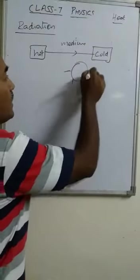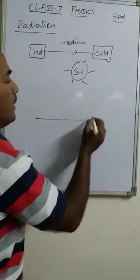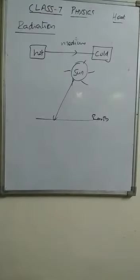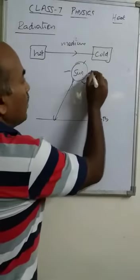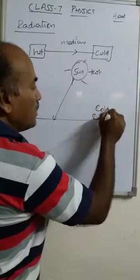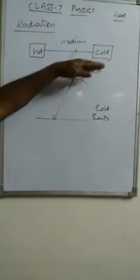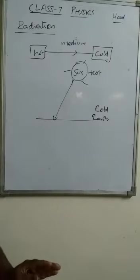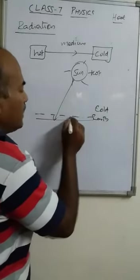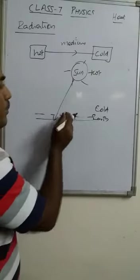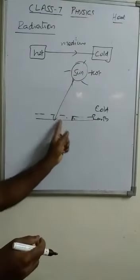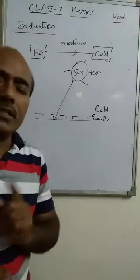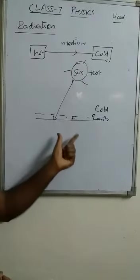An example: from the sun, the earth receives heat. The sun is the hot object and the earth is the cold one, and heat is transferred from hot to cold. In between the sun and earth there is no medium — it is empty space. Up to the earth's surface and atmosphere there is some air present, but beyond that nothing is present. Still, the heat is transferred from hot to cold, so that is the process of radiation. Radiation is the phenomenon in which heat is transferred from hot to cold without affecting the medium.